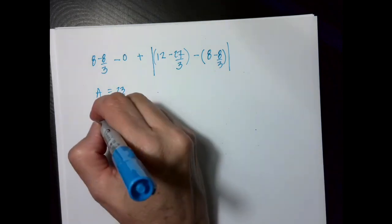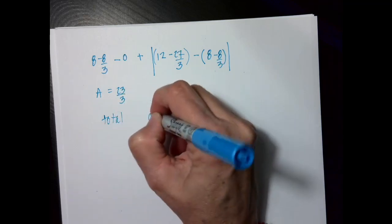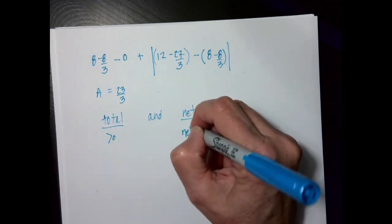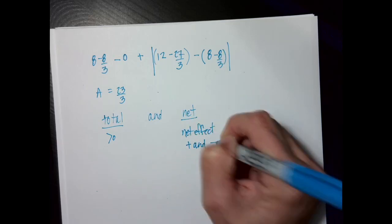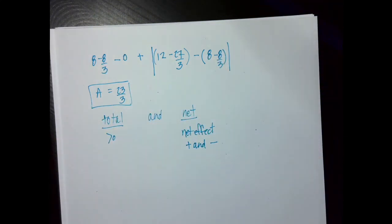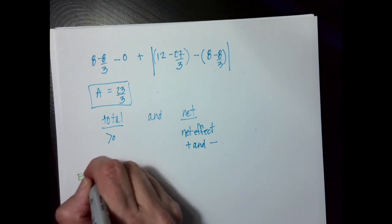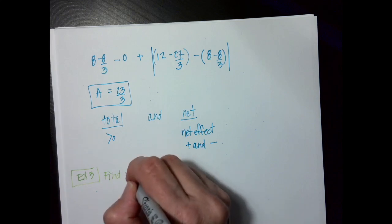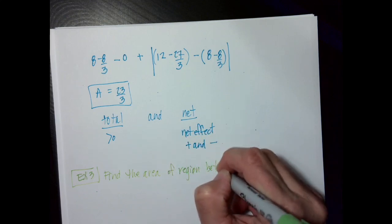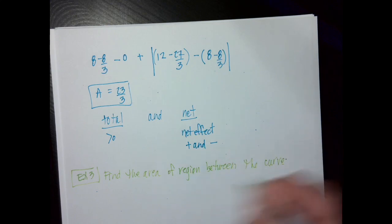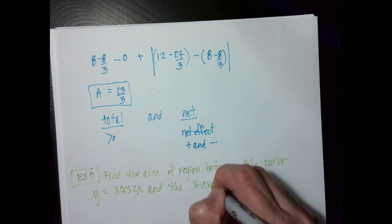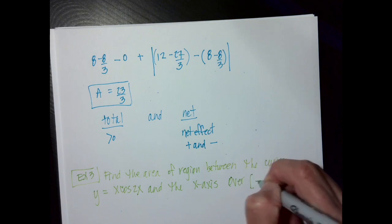The key words to be careful of are 'total' and 'net.' Total means everything should be positive; net means the net effect of having positive and negative. Now for example 3: find the area of the region between the curve y = x cosine(2x) and the x-axis over negative 3 to 3.